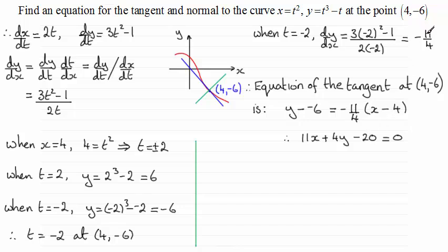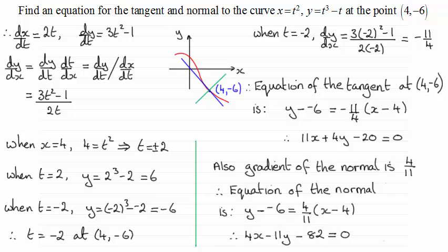Now that we've got the gradient for the tangent, we know that the gradient of the normal would be the negative reciprocal of this, it would be 4 over 11, and we can apply the same form for the equation of a line and get the equation of the normal. So the gradient of the normal is 4 over 11, and the equation of the normal is y minus negative 6 equals 4 over 11 times x minus 4. Multiply this time through by 11, rearrange, and you get 4x minus 11y minus 82 equals 0.